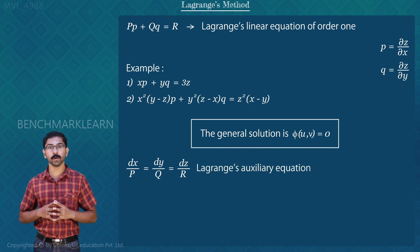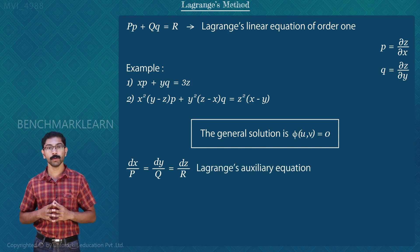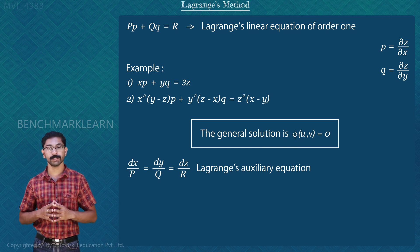This equation is called an auxiliary equation or subsidiary equation. Now, we will find u and v using this auxiliary equation. u and v will be functions of x, y, and z. We will discuss the working rule for finding u and v in the next section.